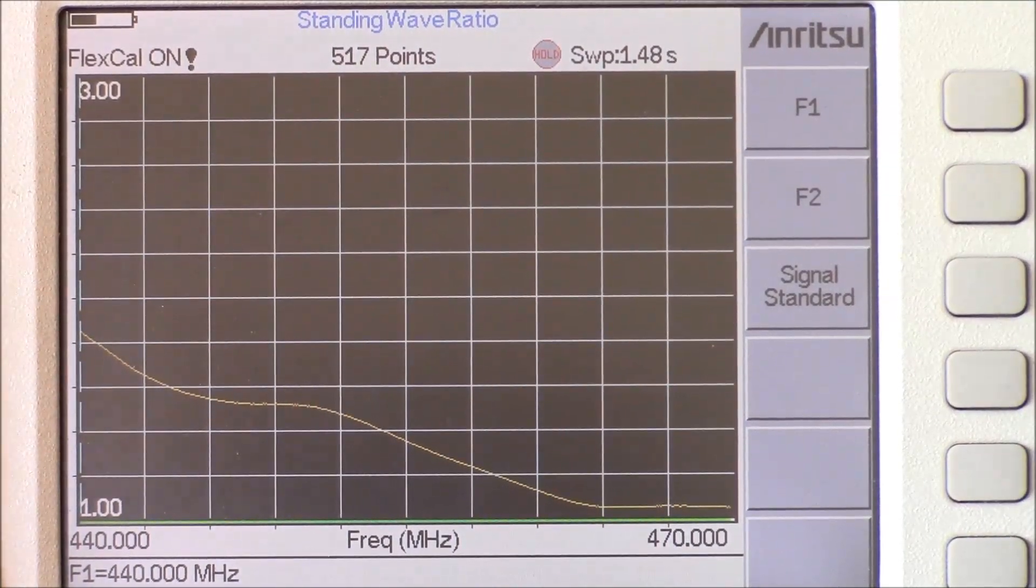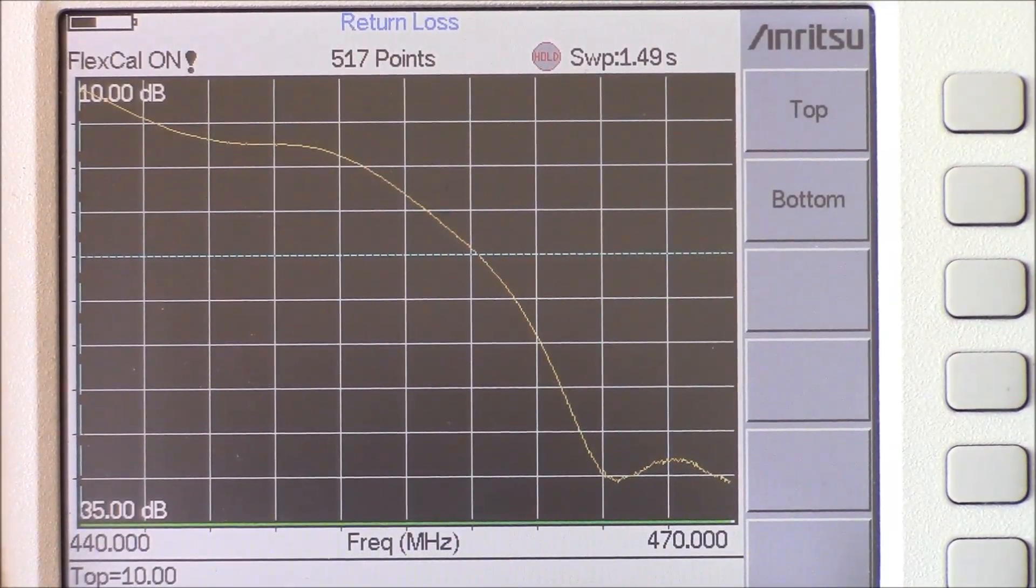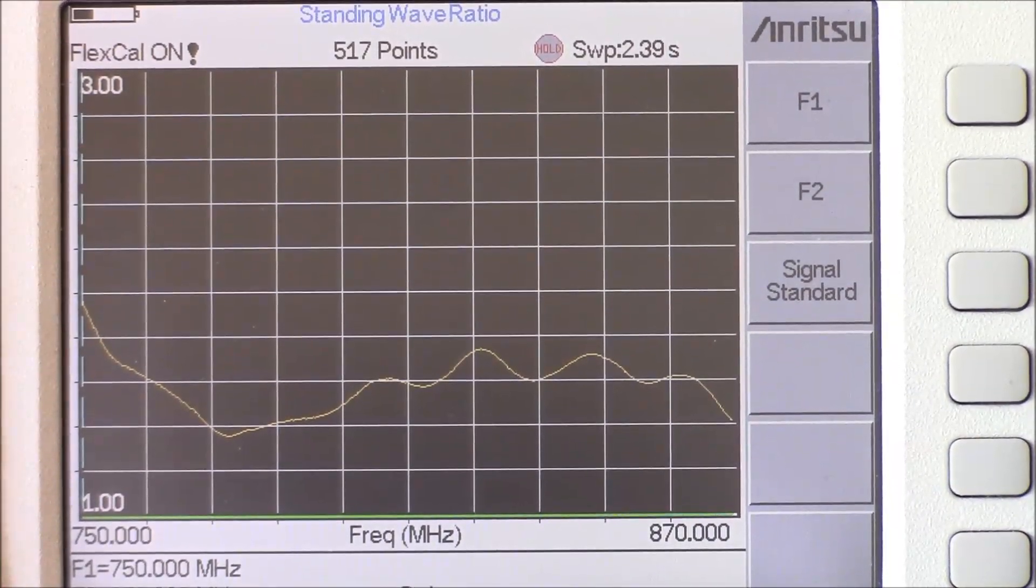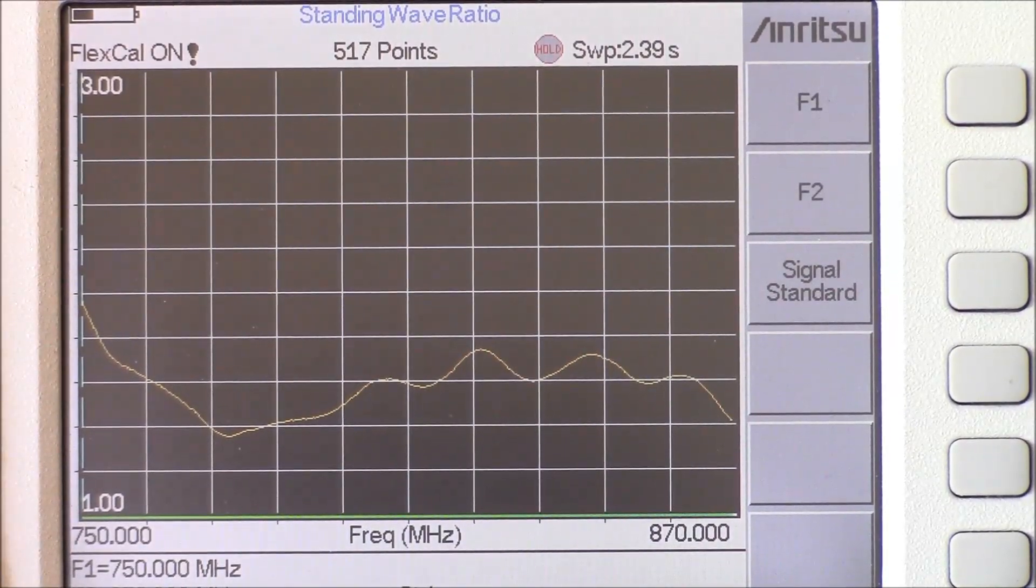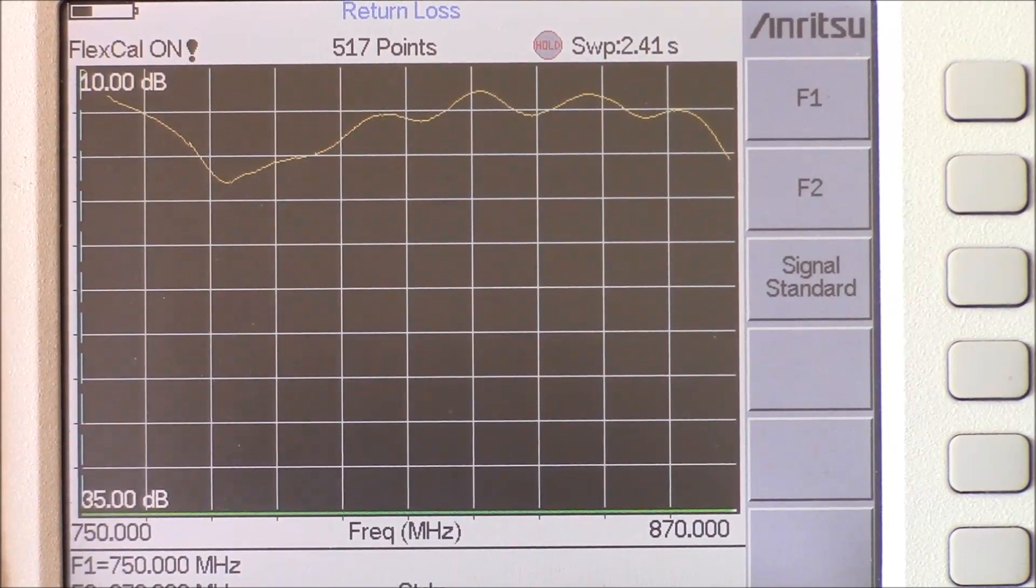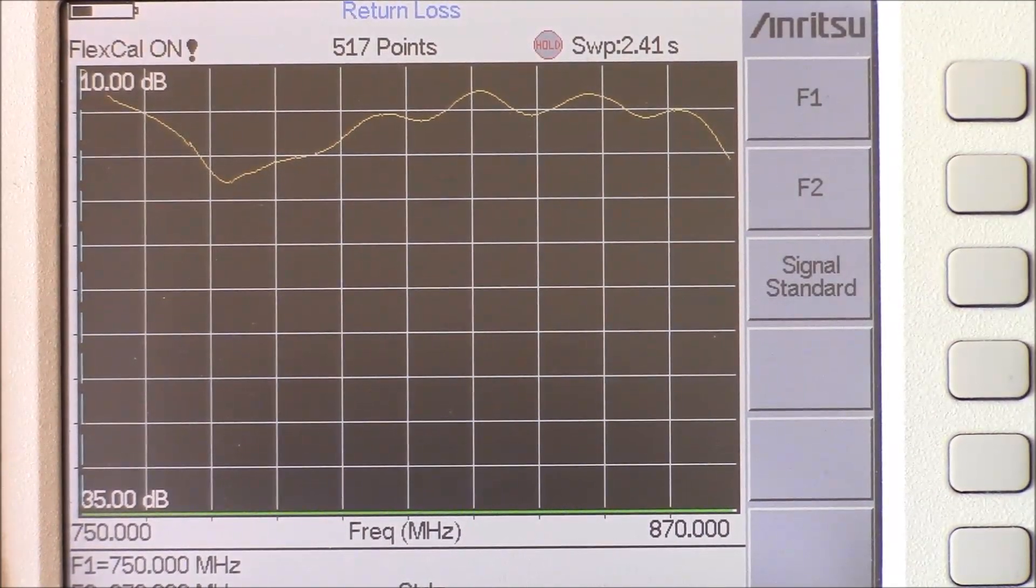Here is the UHF performance of our Pulse Larson tri-band antenna across the swept range. And here is our return loss at UHF frequencies of our Pulse Larson tri-band antenna. Here is the 700-800 MHz performance of our tri-band Pulse Larson antenna. This is the return loss at 700-800 MHz for our Pulse Larson tri-band antenna.